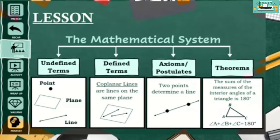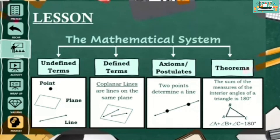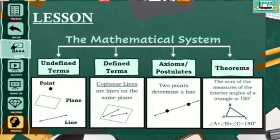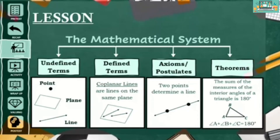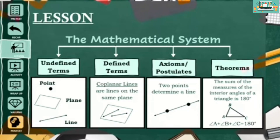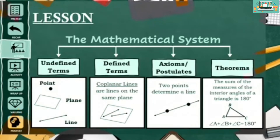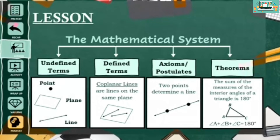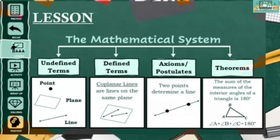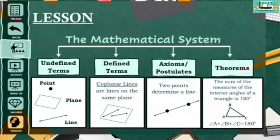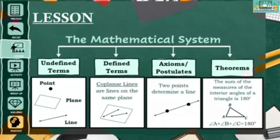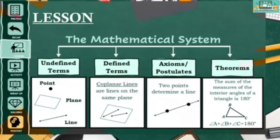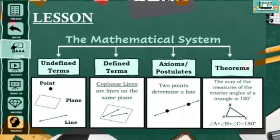Notice that from the given definition of coplanar lines, the words plane and line were used. You can also see these undefined terms in the line postulate. Axioms, also known as postulates in geometry, are statements accepted to be true without proof. An example of an obviously true statement is the line postulate: for every two points, there is exactly one line that contains both points.